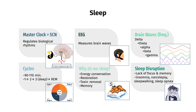So why do we sleep? We still don't fully understand sleep, but some theories are: 1) sleep allows us to conserve energy and avoid predators; 2) sleep is a period of restoration, repairing daily wear and tear; 3) sleep helps clear out toxins and waste products; 4) sleep aids memory consolidation. When sleep is disrupted it can cause lack of focus and memory and even hallucinations, and sleep disorders such as insomnia, narcolepsy, somnambulism or sleepwalking, and sleep apnea, where breathing stops several times throughout the night.